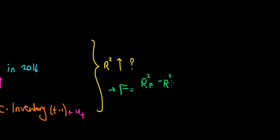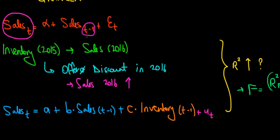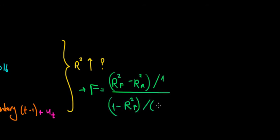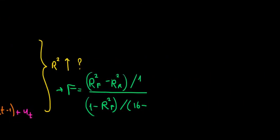We divide that difference by the number of additional variables. Relative to the restricted model, we are adding inventory in the previous period — so one additional variable, divided by one. Then divide by one minus the R-squared of the full model, divided by the number of observations (16 in our dataset), minus the number of parameters in the full model — which is two independent variables, so minus two, minus one.